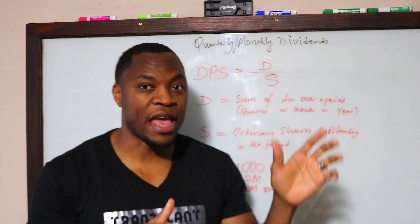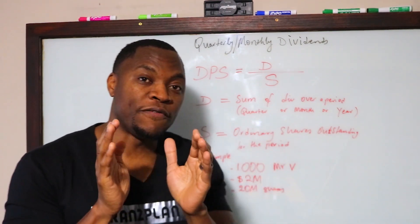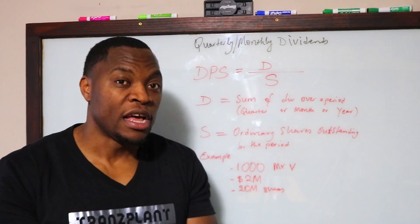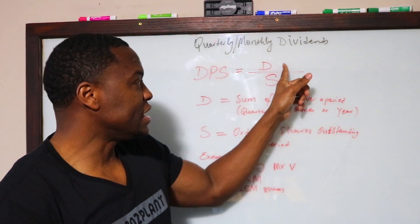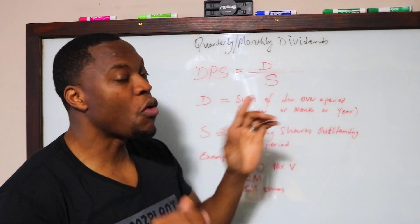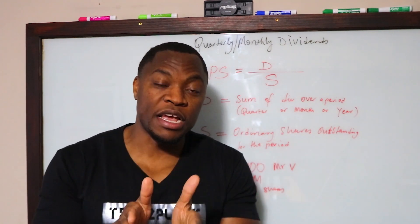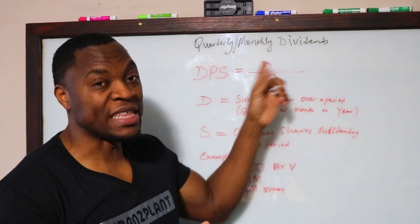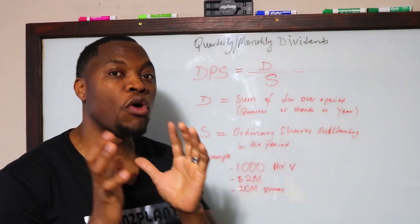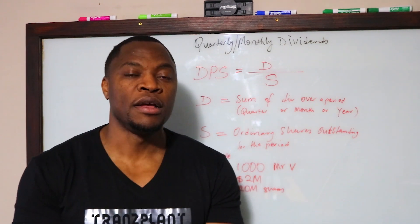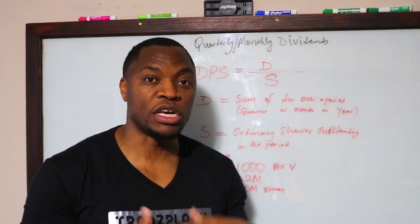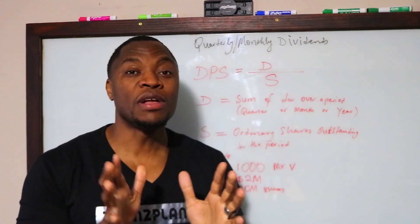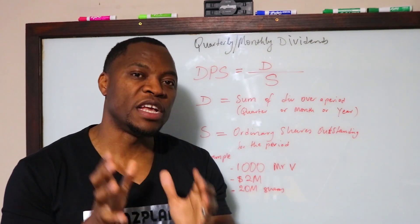On the board here I already have some stuff set up. The formula for dividends per share is very simple — it's D over S, where D is the sum of the dividends over a period. So it could be a year, a quarter, or a month. And S is just the ordinary shares — how many shares of that company are outstanding? The company might have 100,000 shares, a million shares, a billion shares. That's the basic formula to calculate dividends per share.